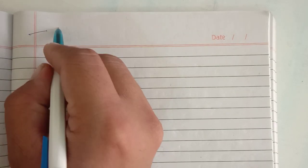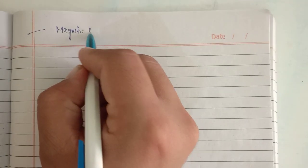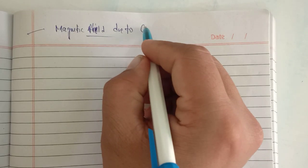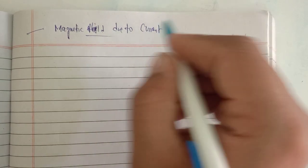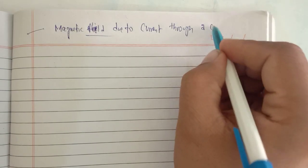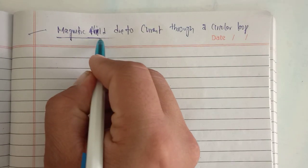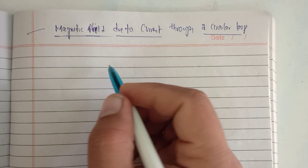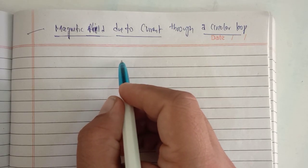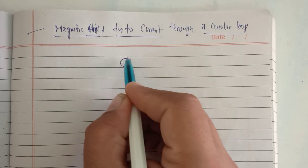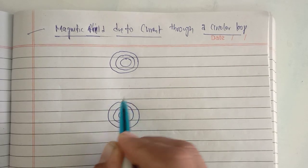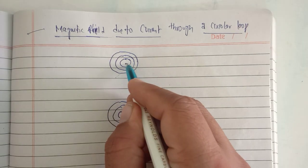Hello everyone. In today's video I will be taking a topic in physics that is magnetic effect — specifically magnetic field due to a current through a circular loop. Here the magnetic field is getting produced through the current which is passing through a circular loop. The diagrammatic representation will be in this way. These are the magnetic field lines here, and two points are there through which the wire is passing — these are the end points.